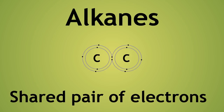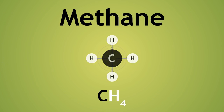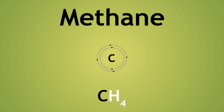Let us take our first alkane in the series, methane, CH4. Carbon has 6 electrons in total, 4 of these being in the outer shell. Carbon, therefore, always needs 4 more covalent bonds to be stable. In methane, the 4 hydrogen atoms have only 1 electron and so covalently bond to the carbon atom, each sharing a pair of electrons.